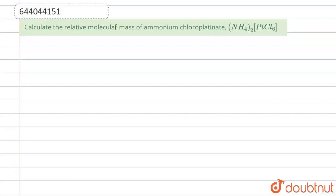Hello everyone, so the question we have is calculate the relative molecular mass of ammonium chloroplatinate. Let us see the molecular mass for this. We have a compound that is (NH4)2[PtCl6]. This is our compound.